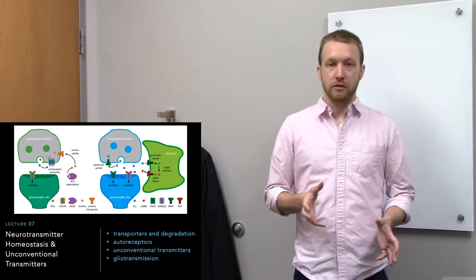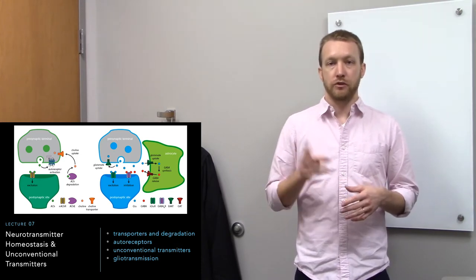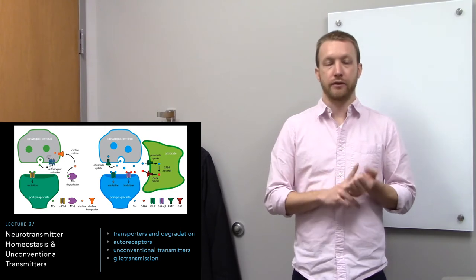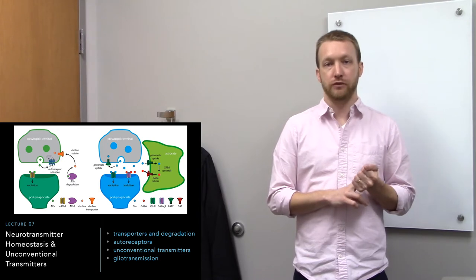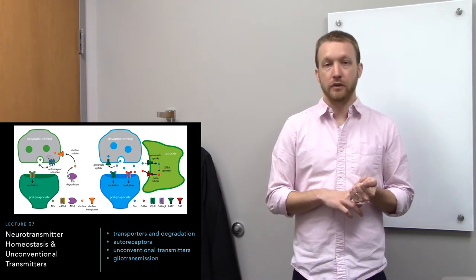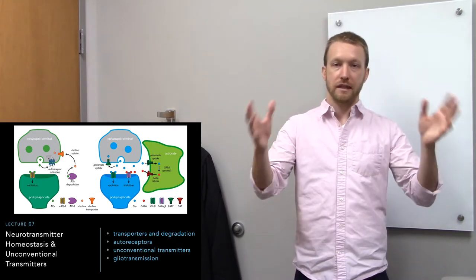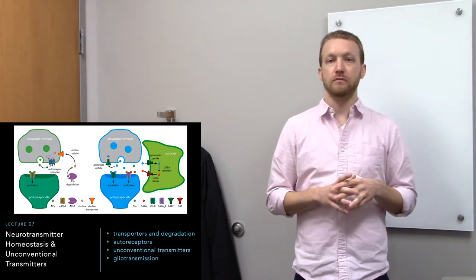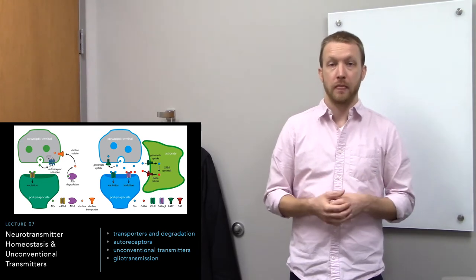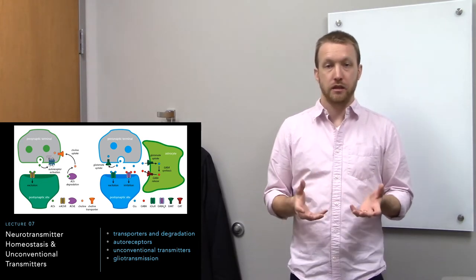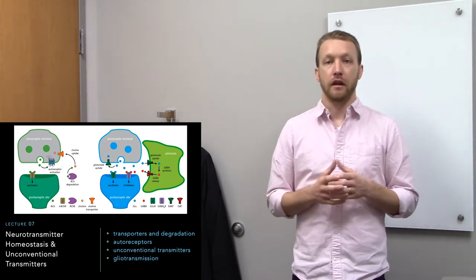Now some neurotransmitters are going to be released in unconventional methods. We're going to talk about two examples: endocannabinoids and nitric oxide. These pass freely through membranes and therefore can't be stored in vesicles. They're synthesized on demand and move freely through membranes to interact with their targets. Some transmitters aren't actually released from neurons — we call these gliotransmitters, because glia can release neuroactive substances to affect activity at the synapse and of neurons themselves.